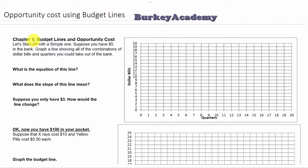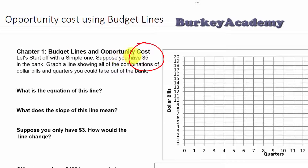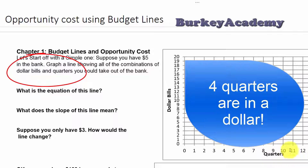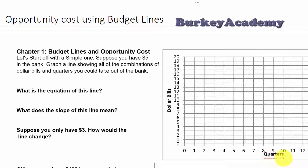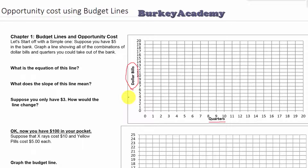In the first example, I'm going to go through something kind of silly — not a typical budget line. We're going to imagine that you have $5 in the bank, and we're going to talk about various ways you might pull that money out. The two ways you might want to take your money out are in quarters or in dollar bills. This is very closely related to production possibilities curves; in this context I think of it as a consumption possibilities curve.